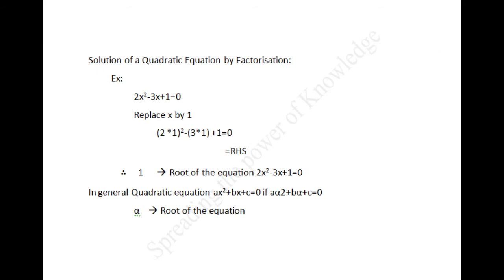Next, solution of a quadratic equation by factorization. Consider the quadratic equation 2x squared minus 3x plus 1 equal to 0. If we replace x by 1 on the LHS of the equation, we get 2 into 1 squared minus 3 into 1 plus 1 equal to 0, which equals the right hand side. Therefore, 1 is a root of the quadratic equation 2x squared minus 3x plus 1 equal to 0, that is, 1 is a zero of the quadratic polynomial 2x squared minus 3x plus 1.